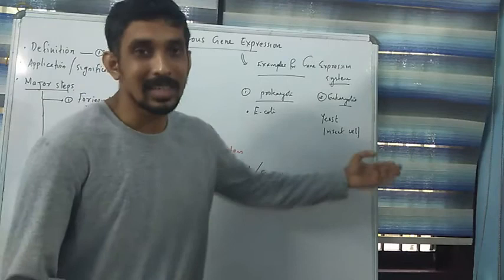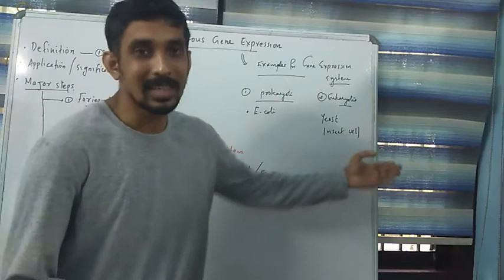For the prokaryotic expression system, the commonly used organism is E. coli bacteria. E. coli bacteria has a very short cell cycle duration, making it a highly suitable prokaryotic expression system for heterologous gene expression.